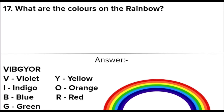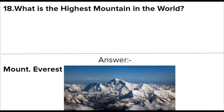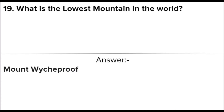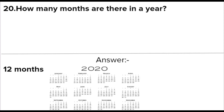Answer: VIBGYOR — V for Violet, I for Indigo, B for Blue, G for Green, Y for Yellow, O for Orange, R for Red. Next question: What is the highest mountain in the world? Answer: Mount Everest. Next question: What is the lowest mountain in the world? Answer: Mount Wycheproof.